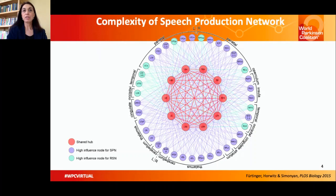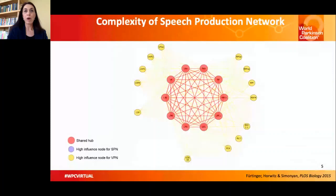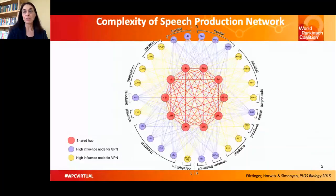Here again, you see shared hubs between syllable and speech production networks, which establish their distinct connectivity with the rest of regions within the network, more widely involving frontal, striatal, and thalamic regions during sentence production compared to syllable production.